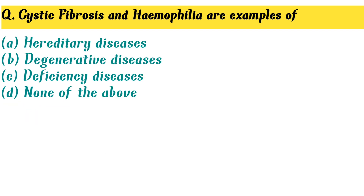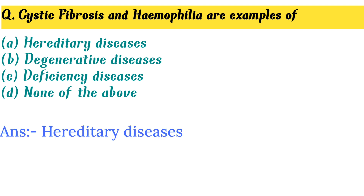Cystic fibrosis and hemophilia are examples of — Option A. Hereditary diseases is the correct answer.